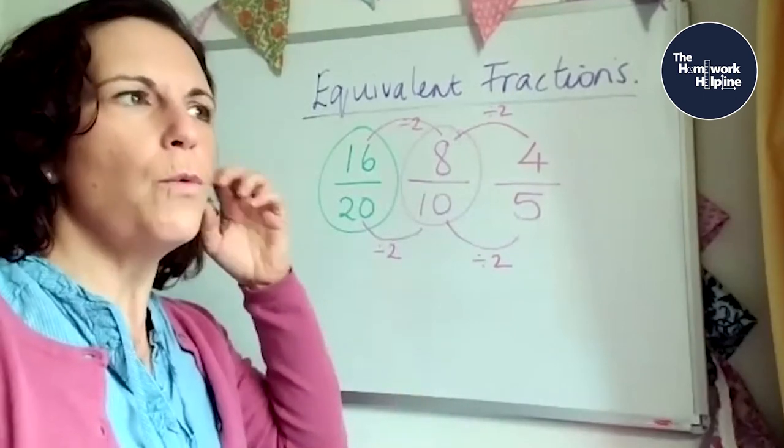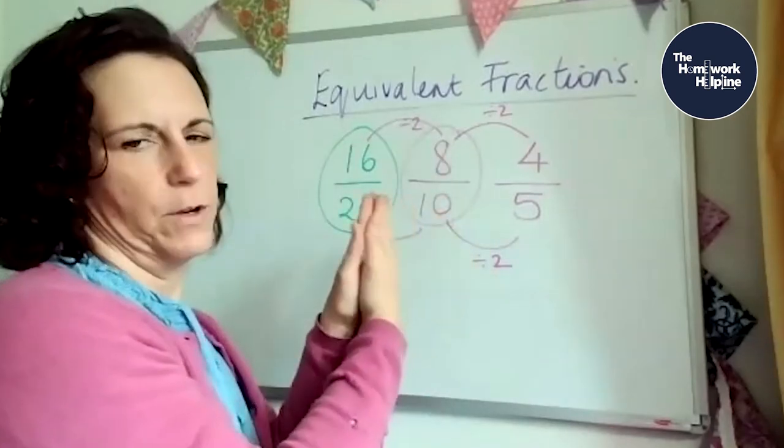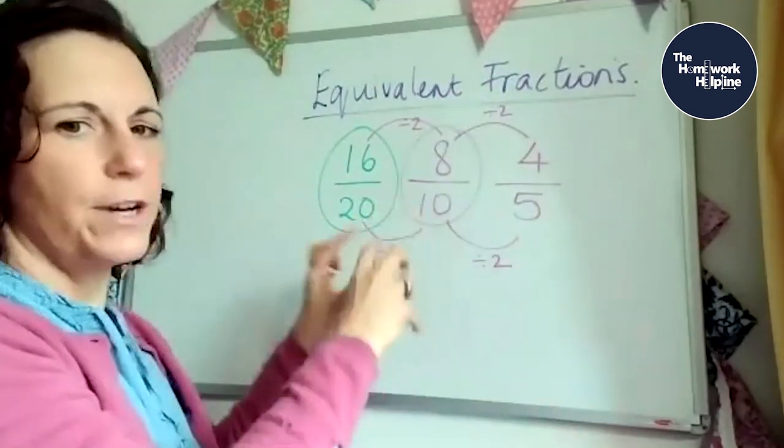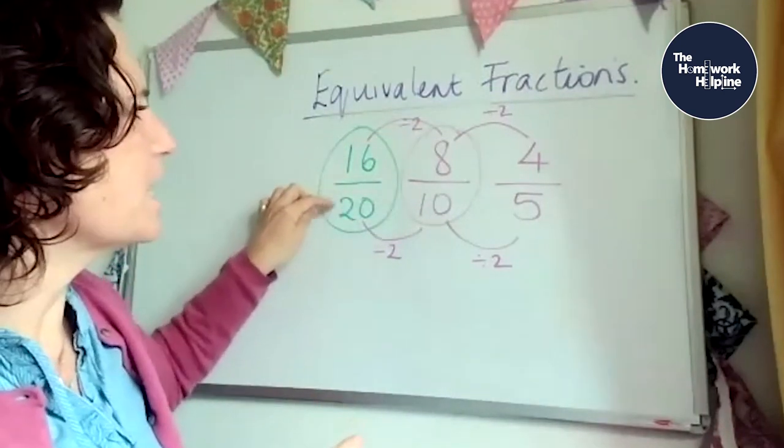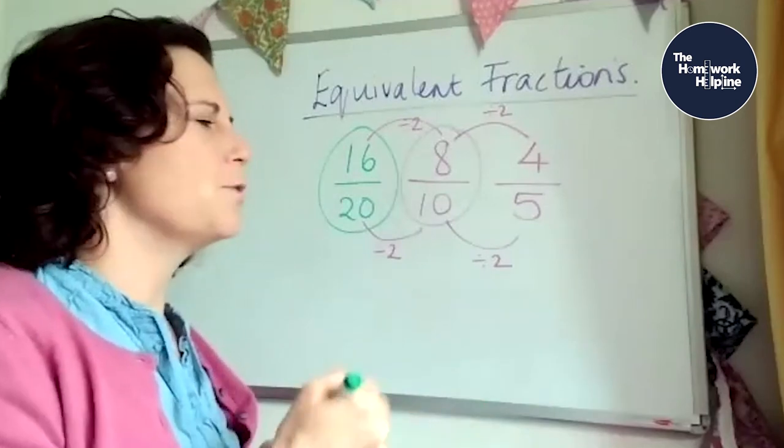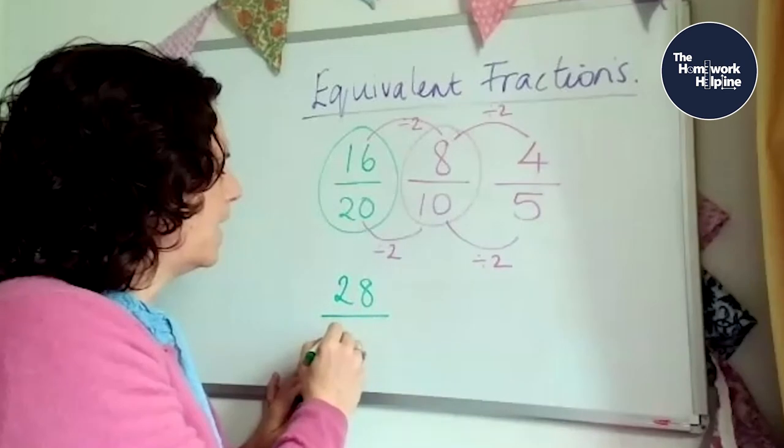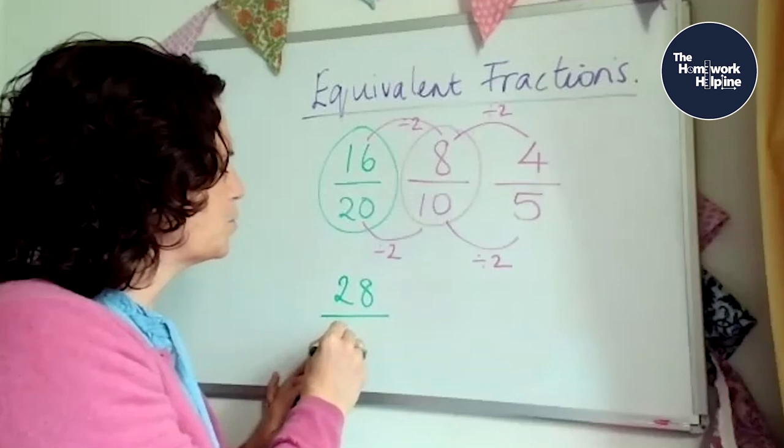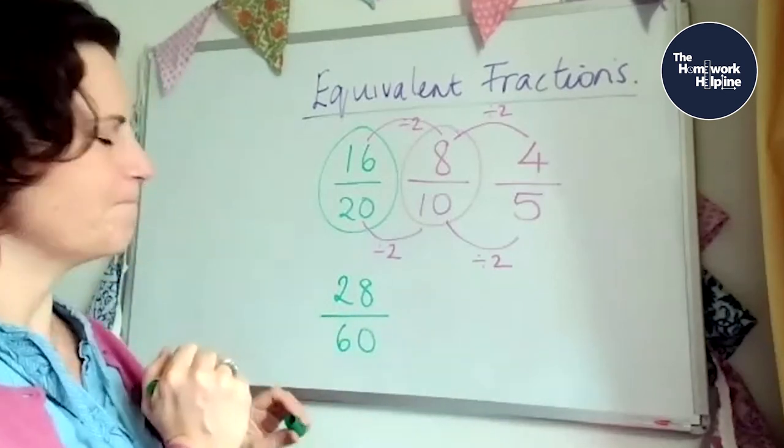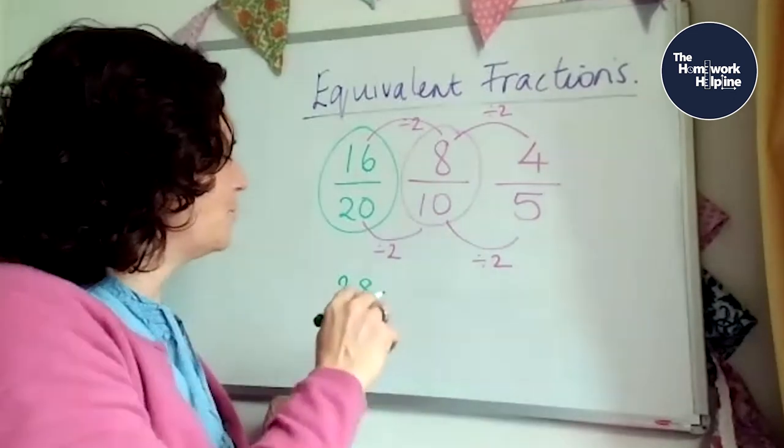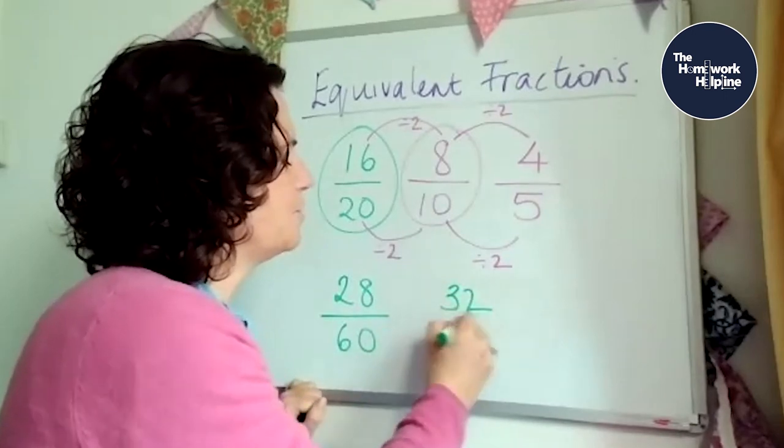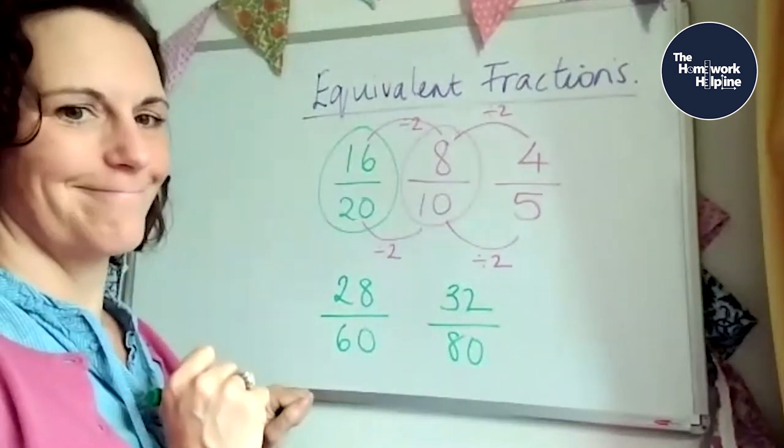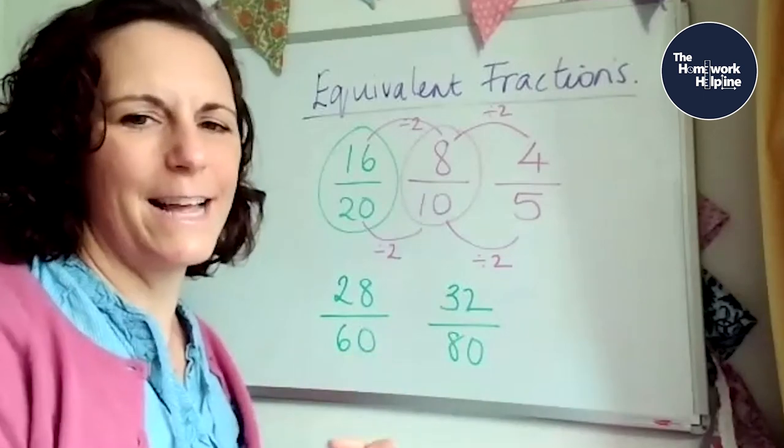Okay, so that is equivalent fractions. So you could, once you've done your fraction family with your smallest fraction in the middle, then making all your equivalent fractions around it, you could do the reverse and make up fractions here and see how small you can make them. So can you work out what this one is? 28 sixtieths. Can you work that one out? Can you work out this one? 32 80ths? Okay, so have a little go at those, see if you can work them out. And let me know how you get on.